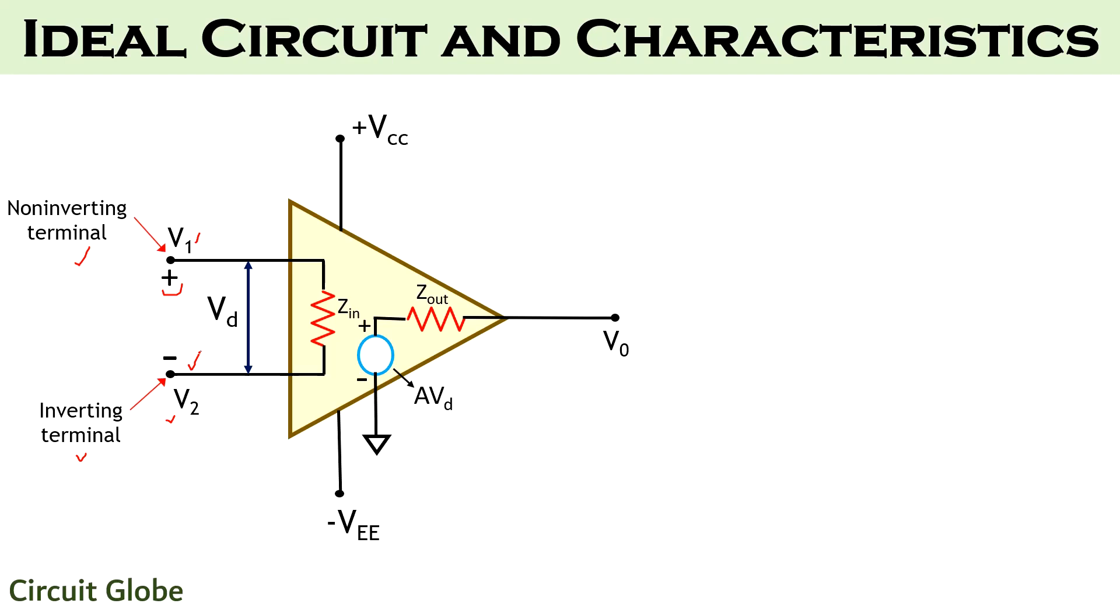Due to the inverting and non-inverting input terminals of the op-amp, the output obtained is the product of gain of the amplifier and the difference of the two signals that are applied at the input terminals. Here this VD represents the voltage equivalent of the difference of two input voltages that is V1 and V2.